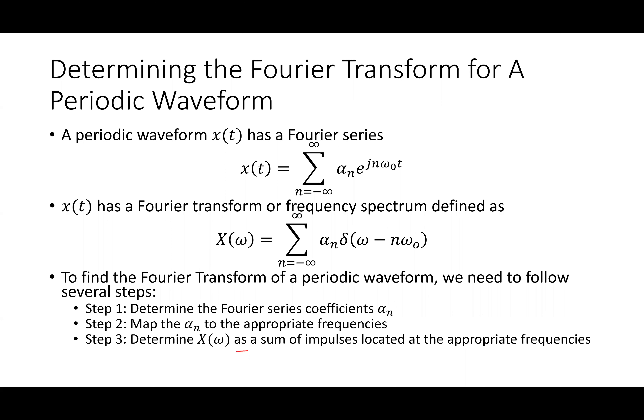We've talked about this idea of a Fourier transform for a periodic waveform. Backing up for a second: a periodic waveform has a Fourier series, which is given by this formula. In words, that means it's a sum of sine and cosine waves. Those sine and cosine waves are harmonically related — there's a fundamental frequency omega-naught, and the harmonic frequencies are n times omega-naught, where n is always an integer.